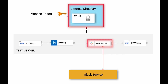I'll be using a Slack request node, and the integration server will be using an external directory vault, and this can all be configured from within the toolkit. The credential that will be added in the vault will be an access token, so that the Slack request node can access the Slack service.